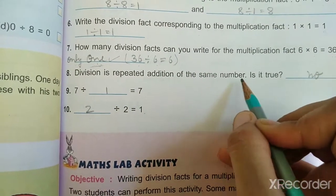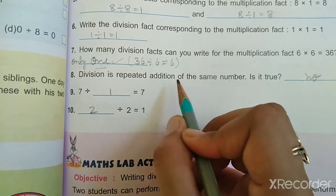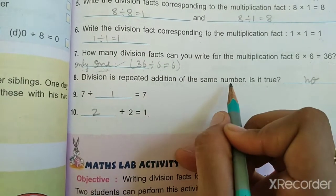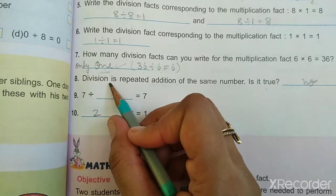Division is a repeated addition of the same number. Is it true? No, everyone. Repeated addition is multiplication. So multiplication is a repeated addition of same number. This is not division.